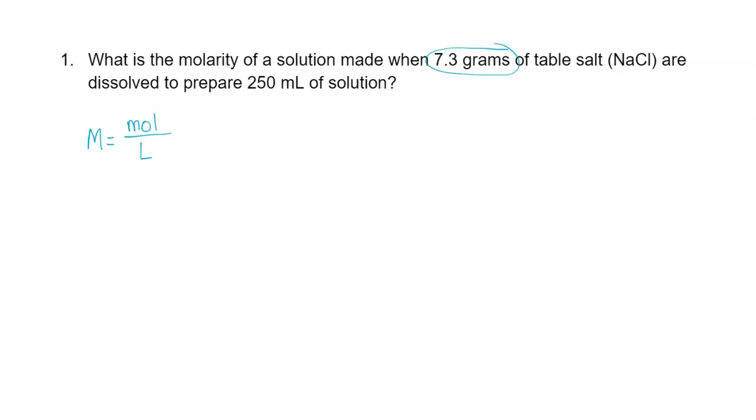Same thing with our volume. We are given a volume in the problem, but it's in milliliters. So before we can substitute into our molarity equation, we'll need to convert that volume to liters. Let's start with the amount of substance, 7.3 grams of NaCl. We're doing a simple mole conversion here. I'll multiply by a conversion factor. We want grams of NaCl to cancel, so that will go on bottom, and moles of NaCl is what we desire, so that goes on top.